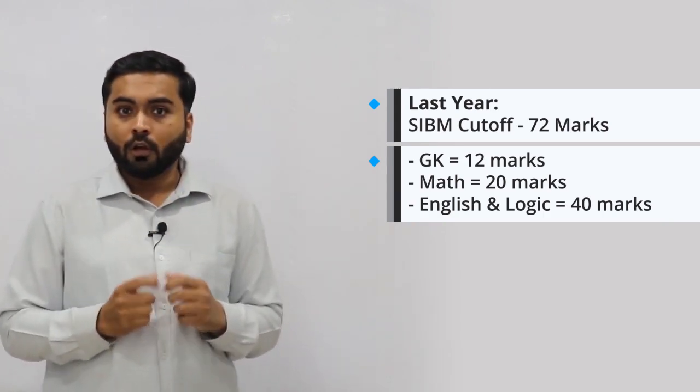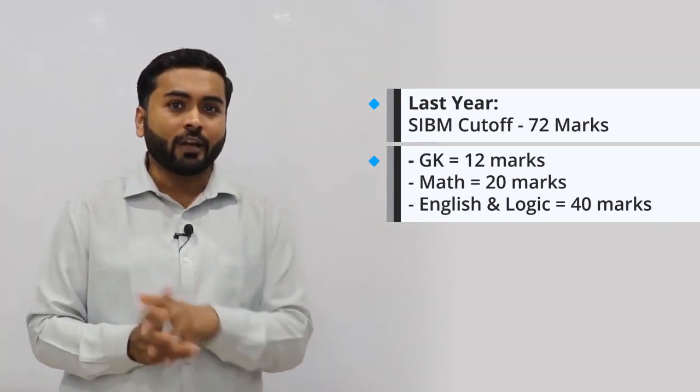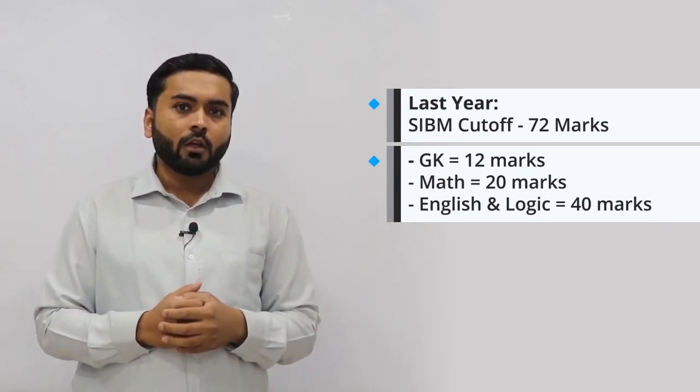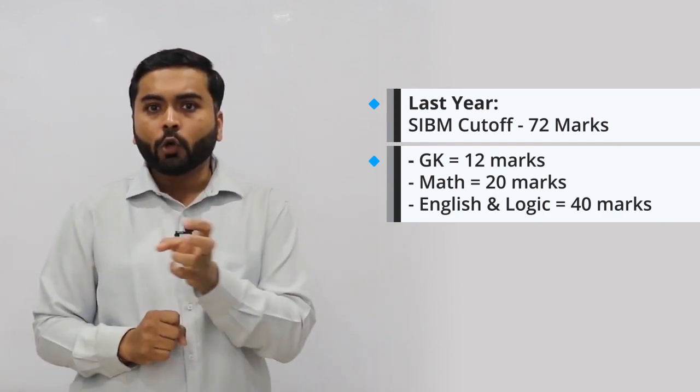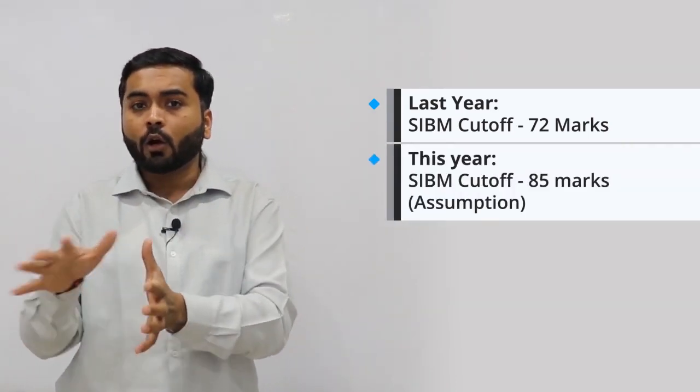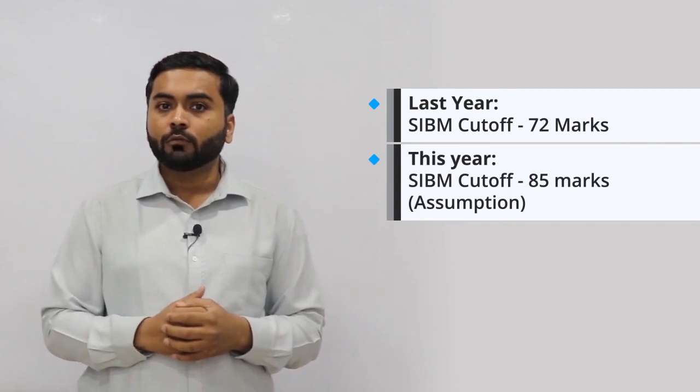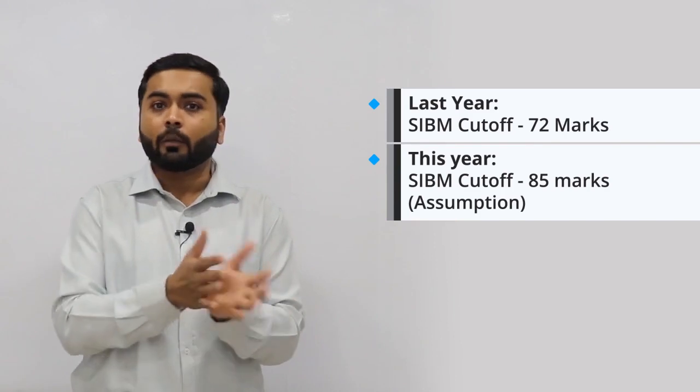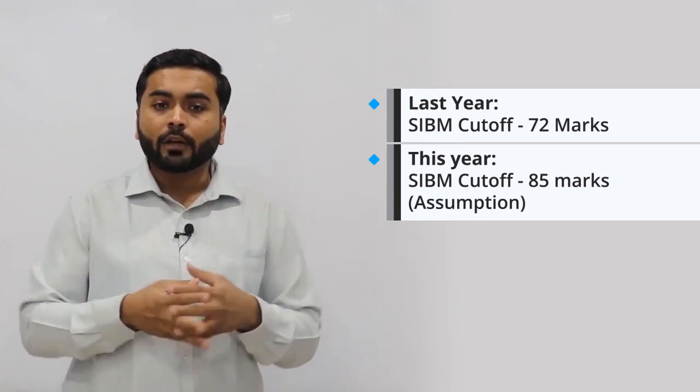There's one more catch here. We removed GK section where a student scored 12 marks. If he scored 12 marks reading 25 questions and attempting some of them, he would have at least spent 10 minutes, minimum of 10 minutes. In those 10 minutes, a student probably can solve around 4 to 6 questions and score around 5 or more marks, which means we are looking at 80 plus 5, around 85 marks cutoff for SIBM, which was last year 72, provided the premise here was the paper level of difficulty would remain the same.